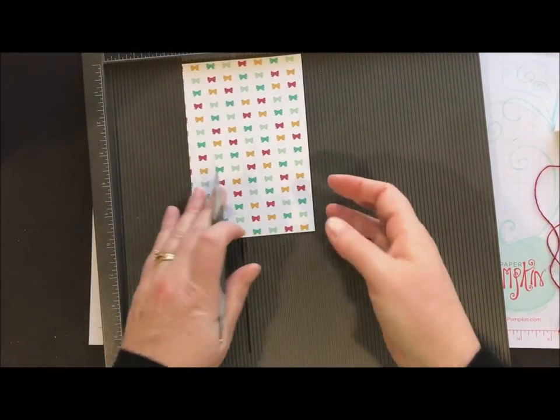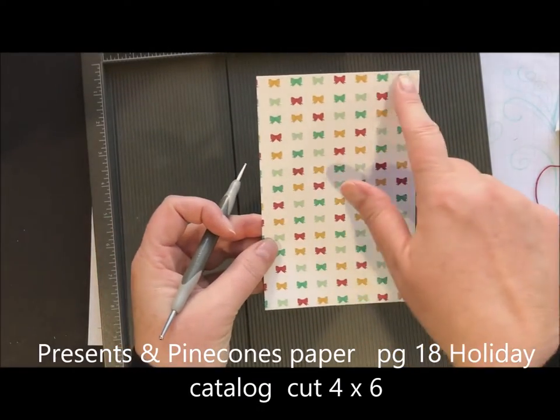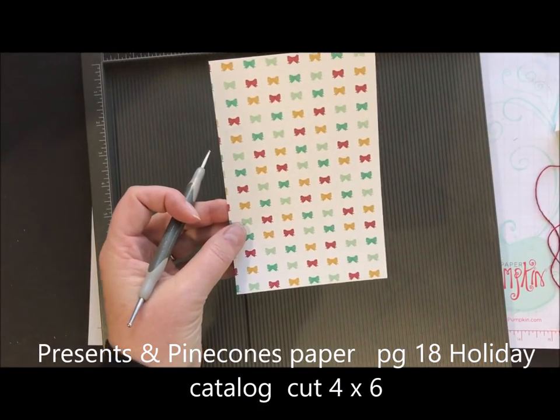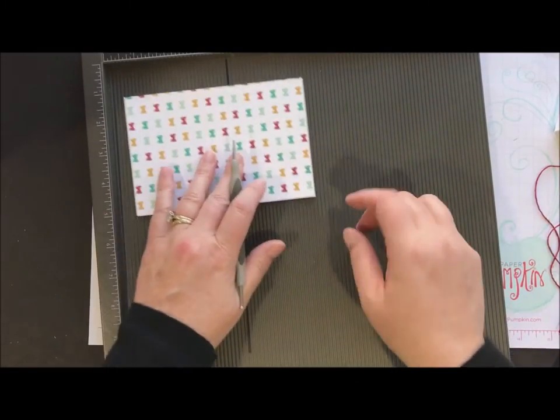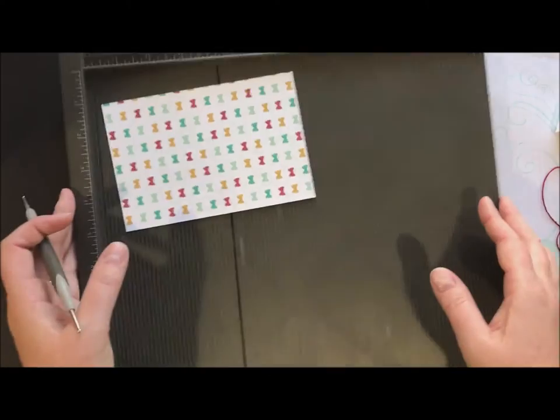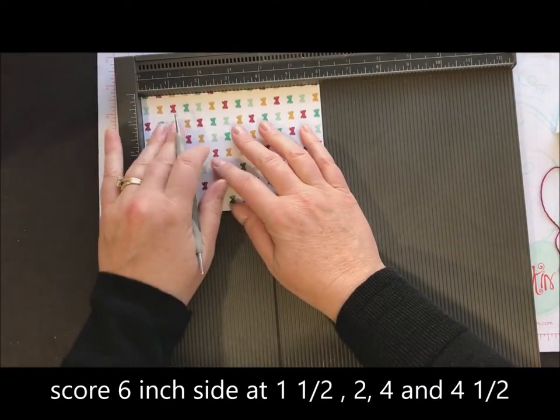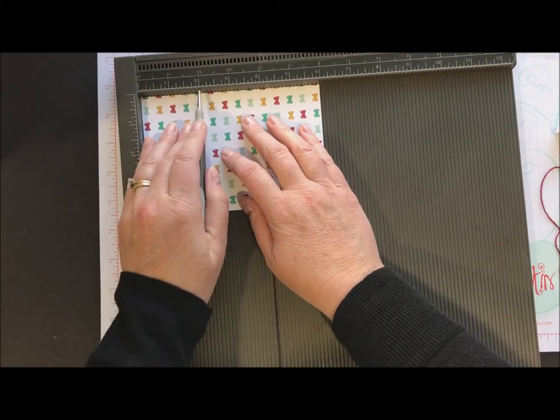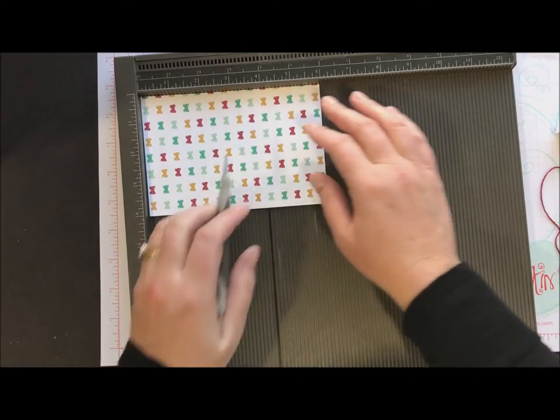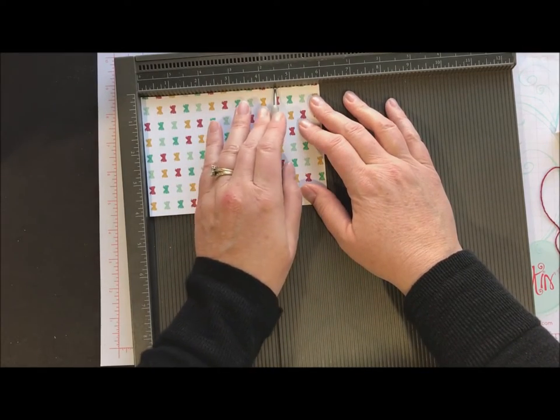So I need my score tool and I also need a piece of DSP that is 4 inches wide, 6 inches long. And we're going to do a little bit of scoring here. I'm going to score the long side at one and a half and two, also at four and four and a half.